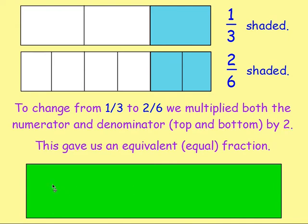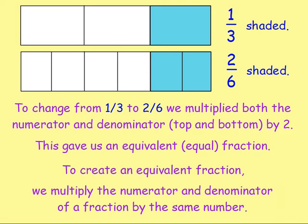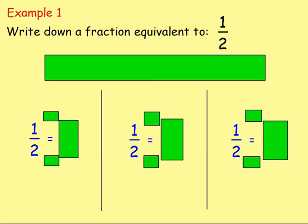So one times two gives you two, and three times two gives you six - we have a fraction that is the same, known as an equivalent fraction. If we are given a fraction, we can create an equivalent fraction by multiplying both the numerator and denominator - top and bottom - by the same number. Let's try that with an example. Example one: write down a fraction equivalent to one half. To do this, you need to think of a number to multiply the numerator and denominator by - you can pick any whole number you like.